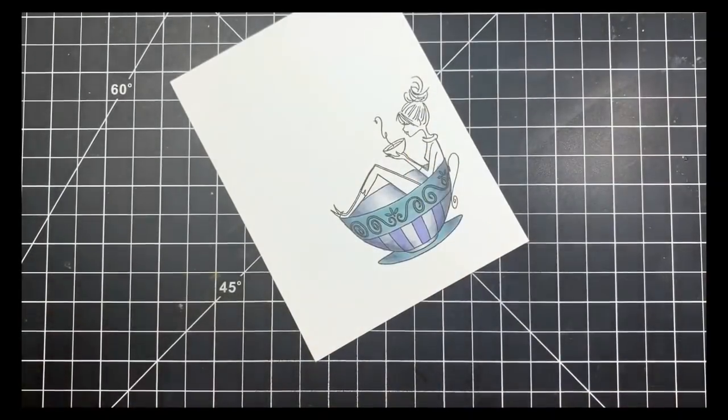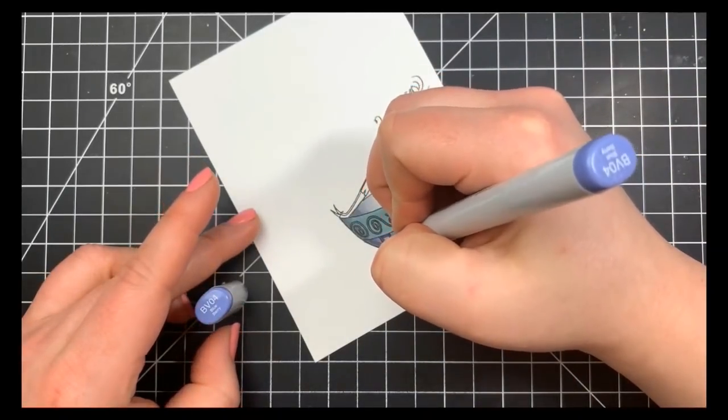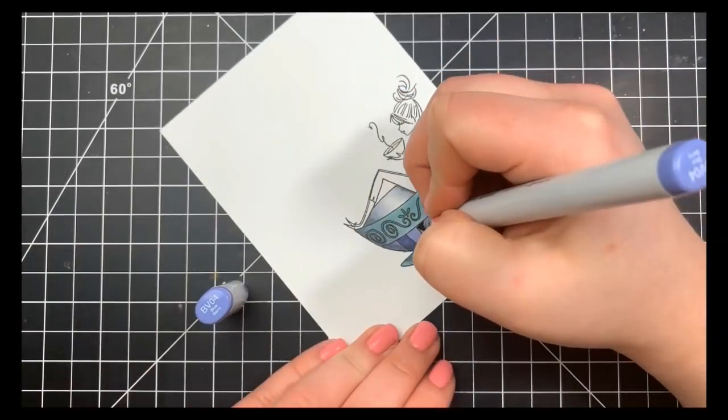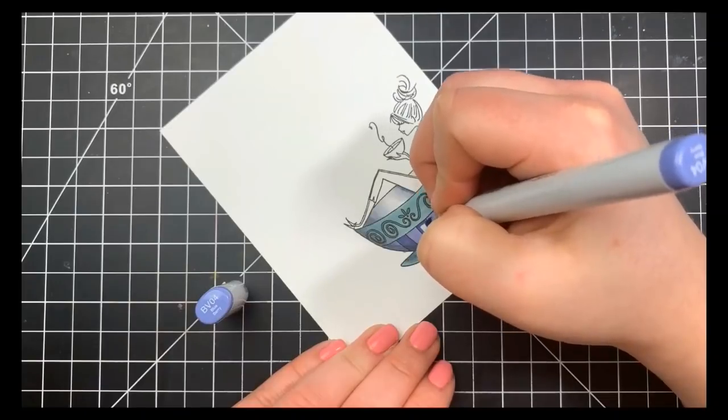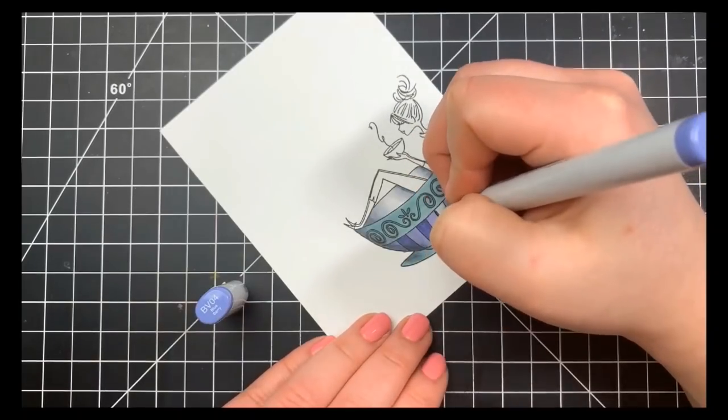So for the little stripes, I'm going to bring in some BV markers and I'm just going to color these every other one. Again, not having to worry about doing any shading because we have those cool gray markers down first.